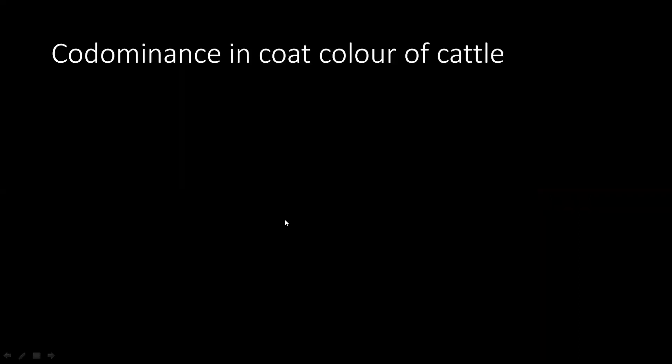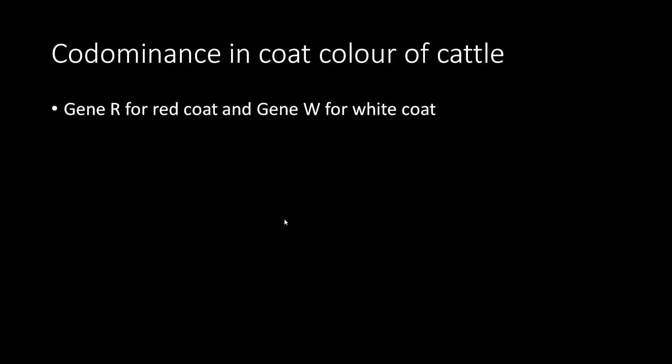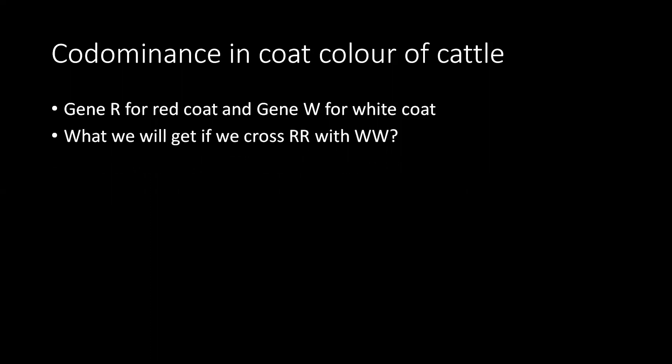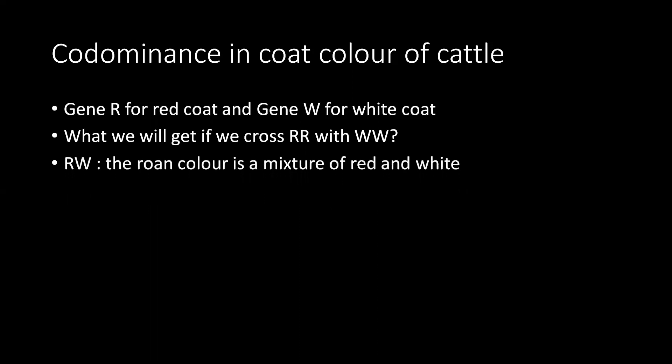In co-dominance of cattle coat color, gene R codes for red coat and gene W for white coat. When RR is crossed with WW, you get RW everywhere. The RW color is a mixture of red and white — called roan — which has separate patches of red and white.